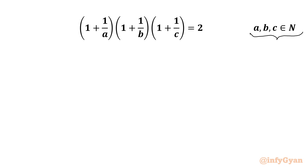Natural numbers start from 1, 2, 3, 4 up to any defined positive integer. Now we have A, B, C in our LHS, so 3 variables are here.